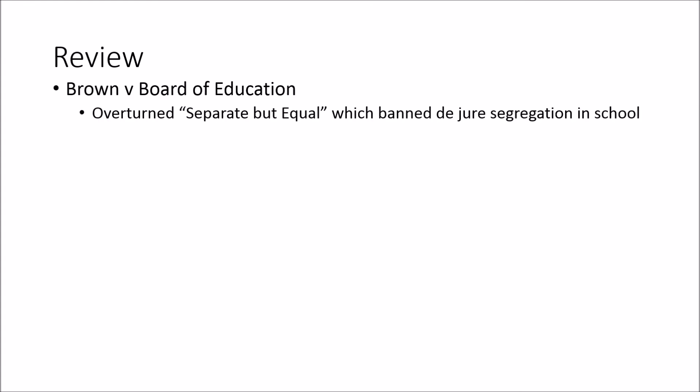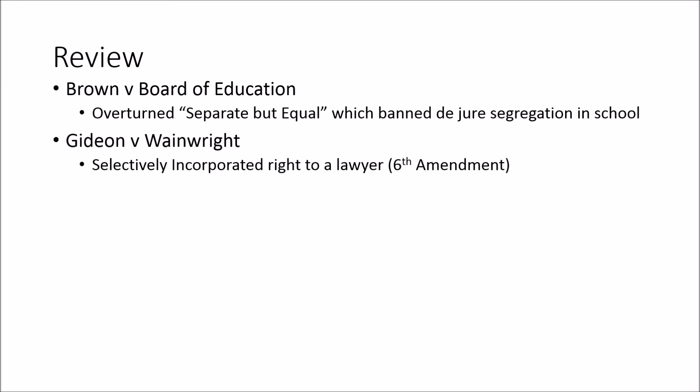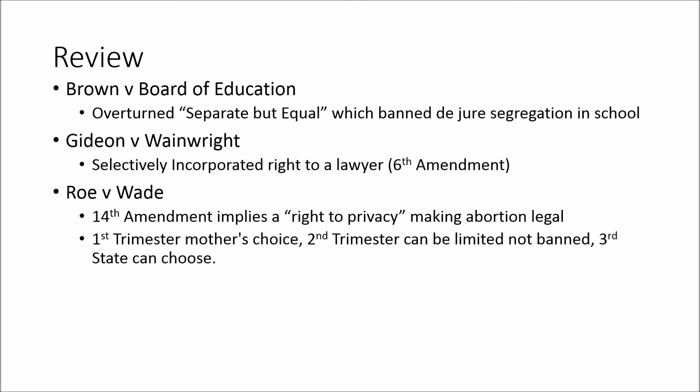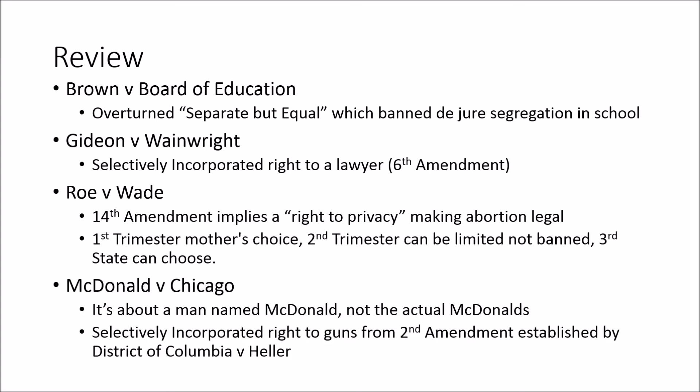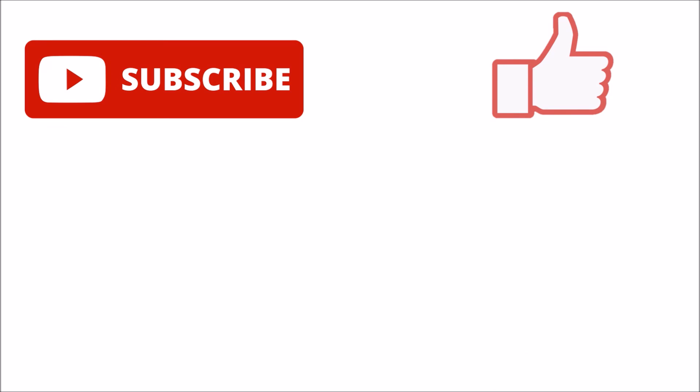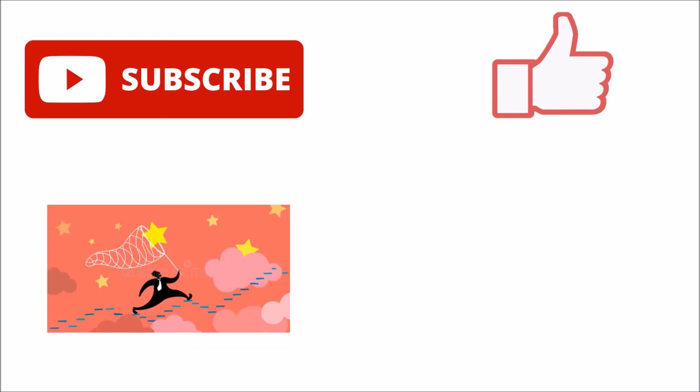In conclusion: Brown v. Board of Education overturned separate but equal; Gideon v. Wainwright selectively incorporated the right to an attorney granted by the Sixth Amendment; Roe v. Wade used an implied right to privacy from the 14th Amendment to make abortion legal, with the first trimester the mother's choice, the second can be restricted but not banned, and the third under state control; and McDonald v. Chicago selectively incorporated the right to bear arms from the Second Amendment, established by District of Columbia v. Heller. Make sure you subscribe and like the video, and remember to chase your dreams, stick to your passion — peace out.